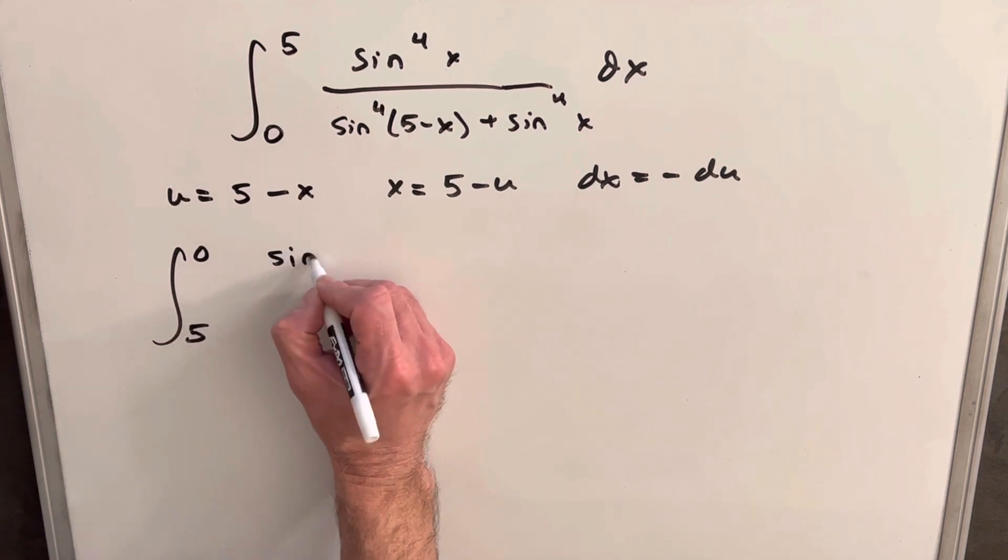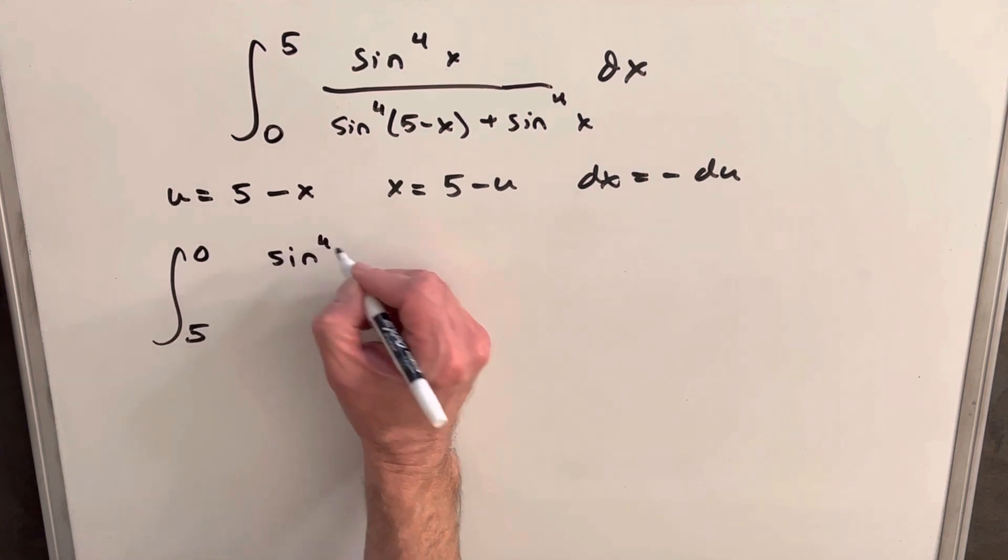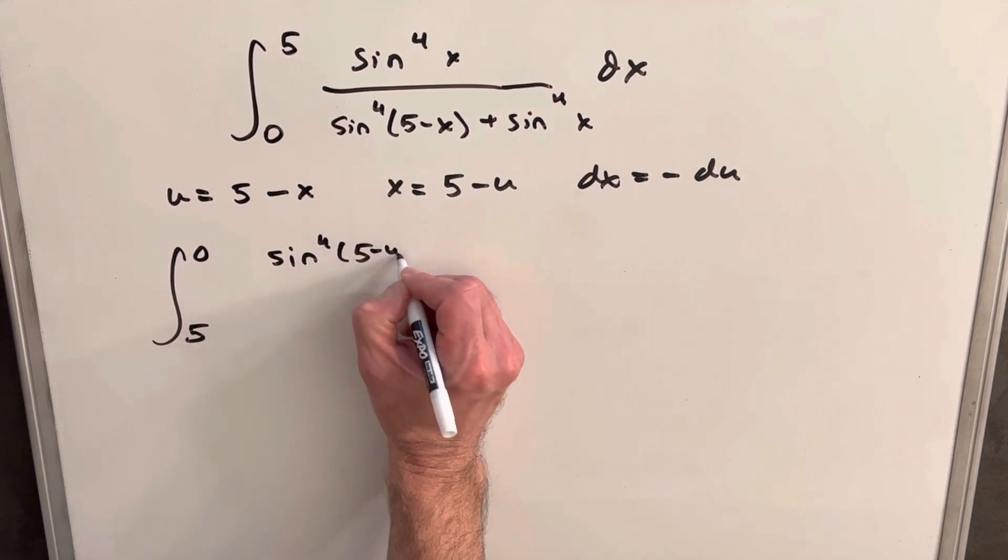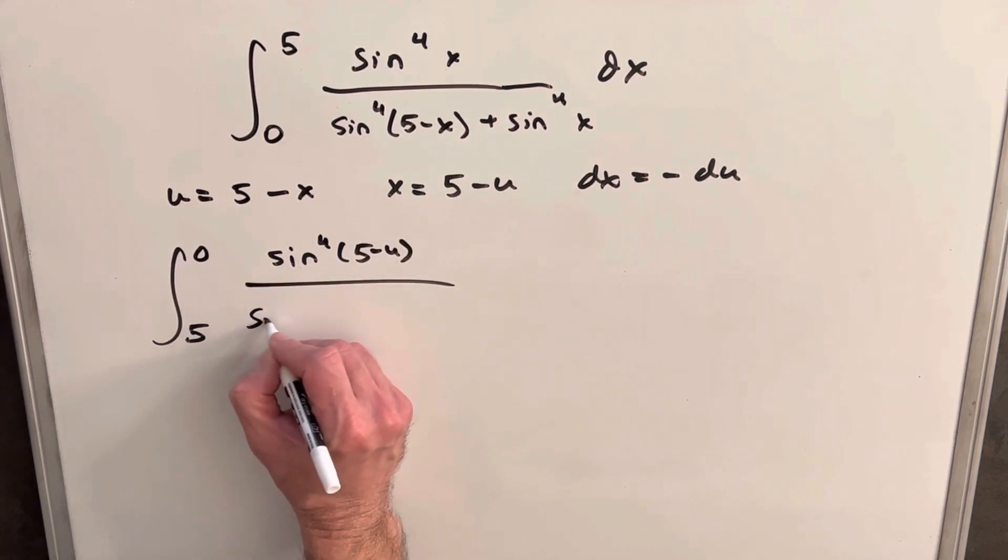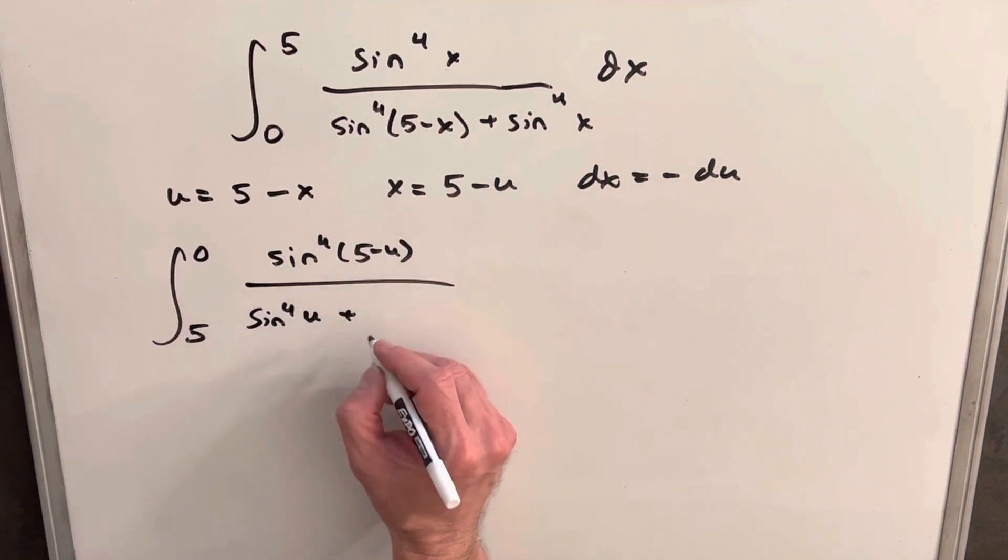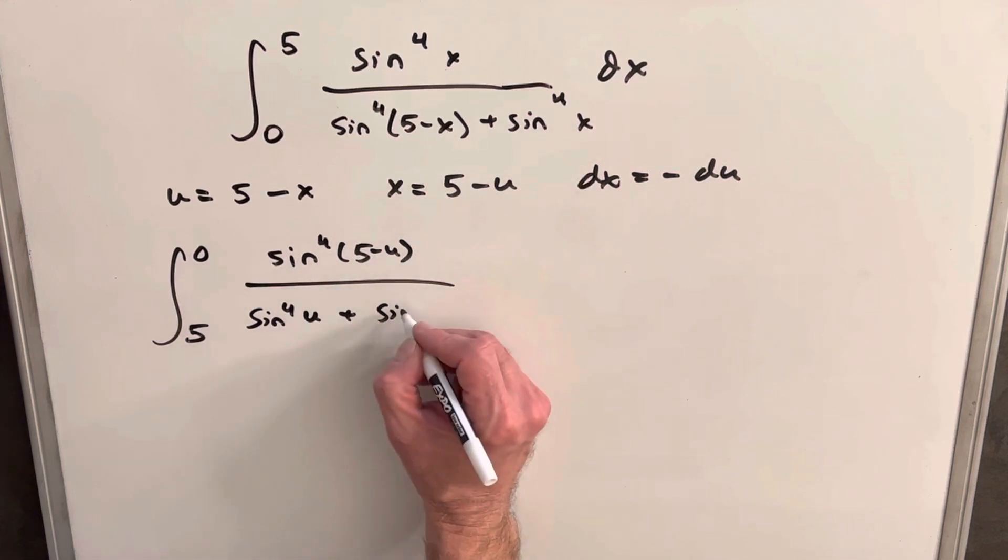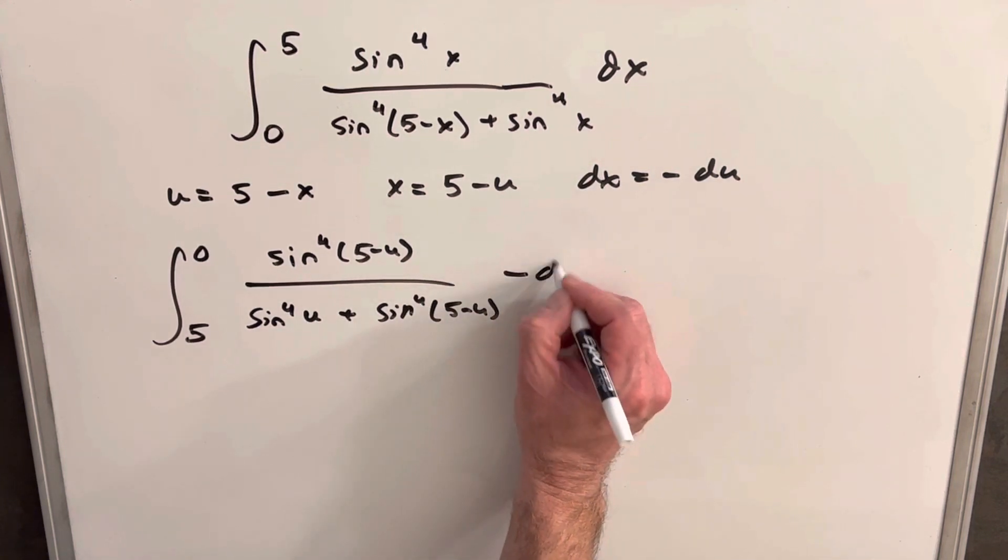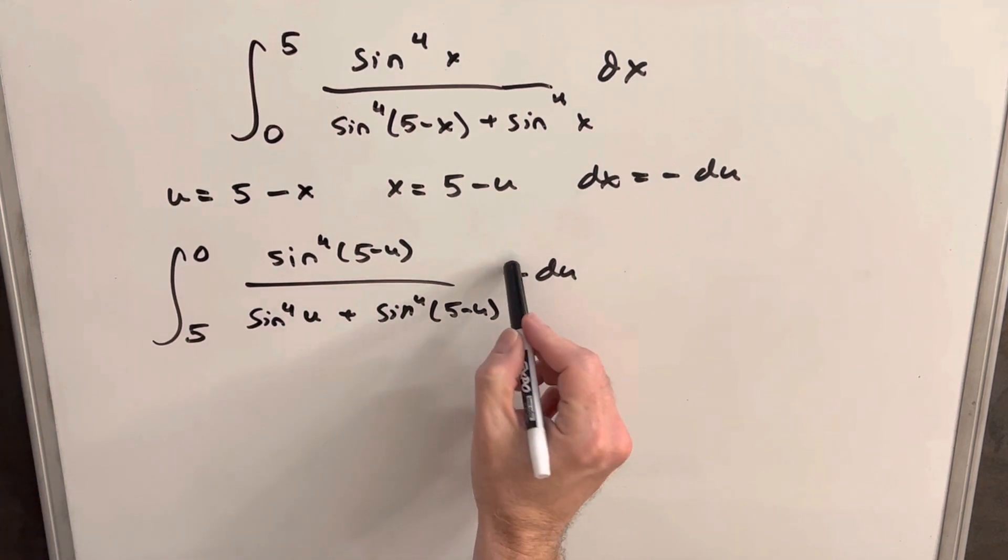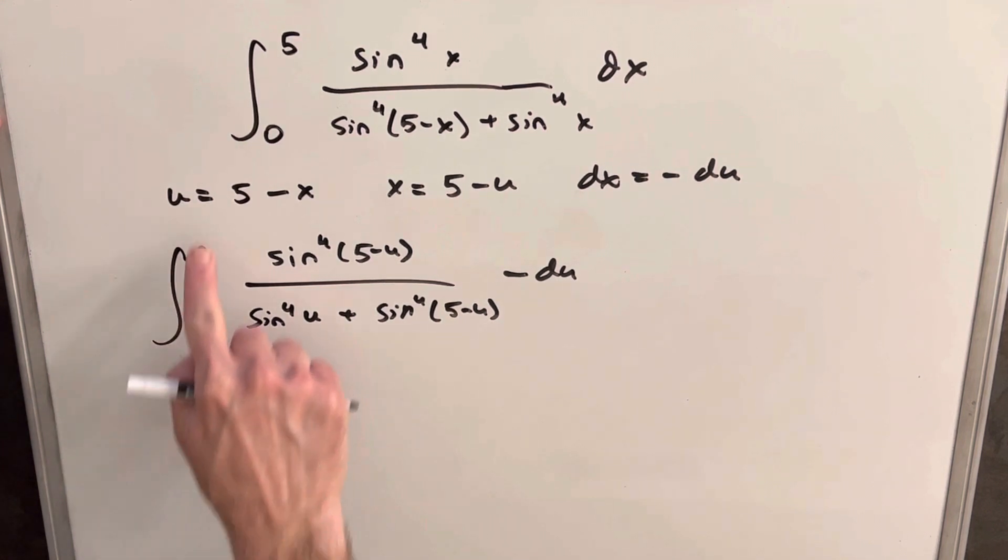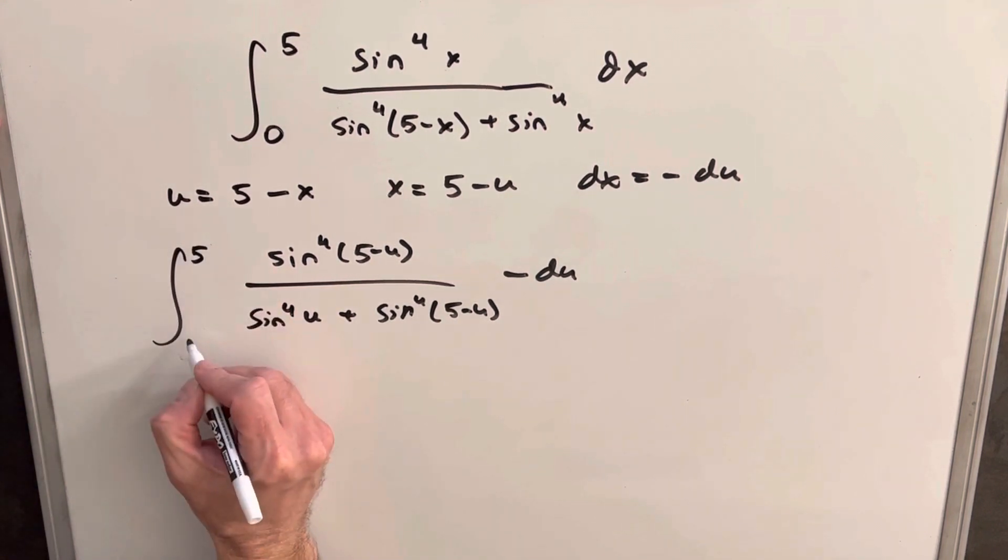And then, see, in our numerator, we have sine to the 4th, and our x is 5 minus u. Then we're going to have sine to the 4th, 5 minus x, this is going to be a u here, plus, and then again, the same thing, sine to the 4th, 5 minus u, minus du. Then what I can do is I can take the minus sign and bring it out front and use that to flip our bounds. But I think I'm just going to do that and just write it in. So we're going to have 5 here and a 0 here, and this becomes a plus.